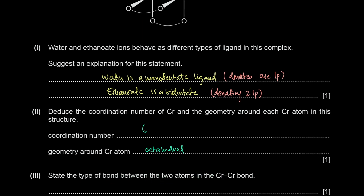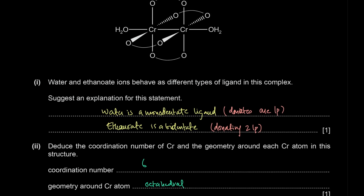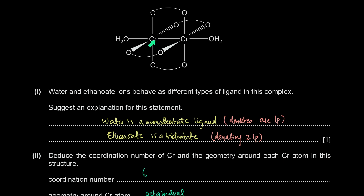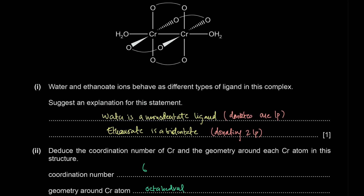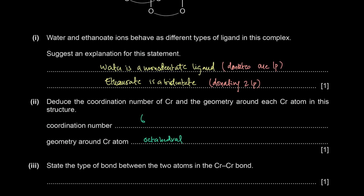State the type of bond in the Cr–Cr bond. For any complex, the type of bonds are dative covalent bonds, also called coordinate bonds — either term is acceptable.